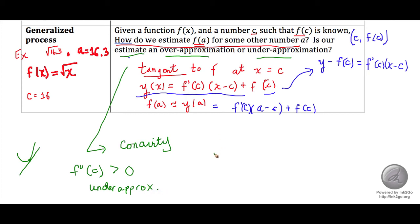And if you have it the other way around, where f double prime at c is negative, so it is concave down, like this, and you have that tangent line going through, then it's going to be an overapproximation.